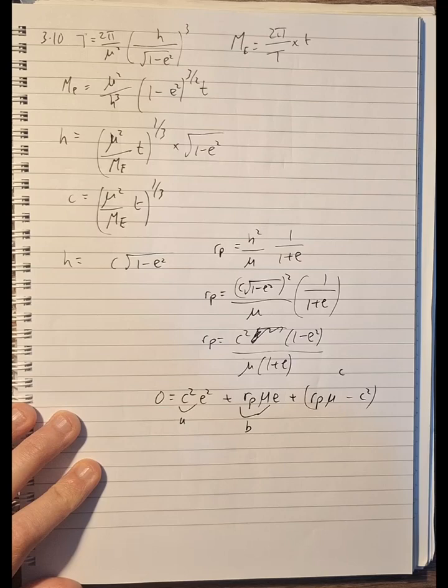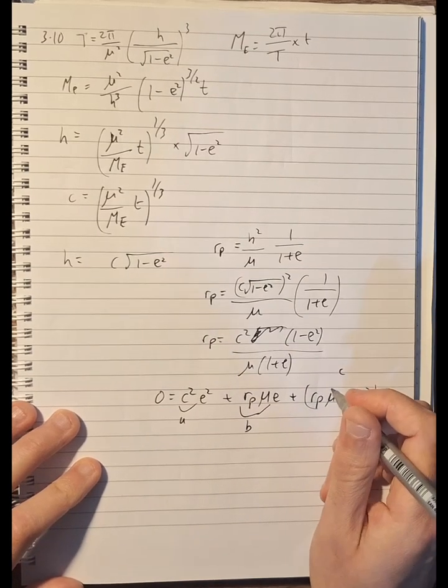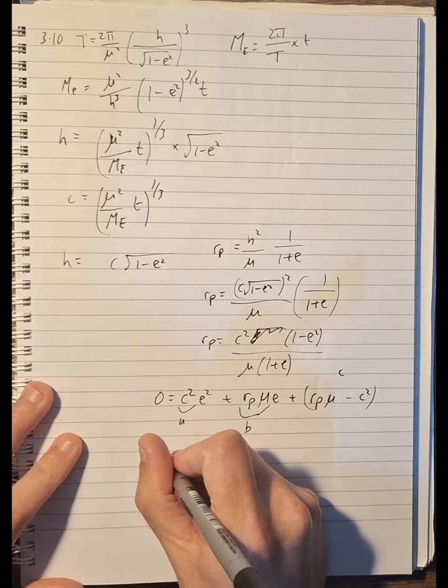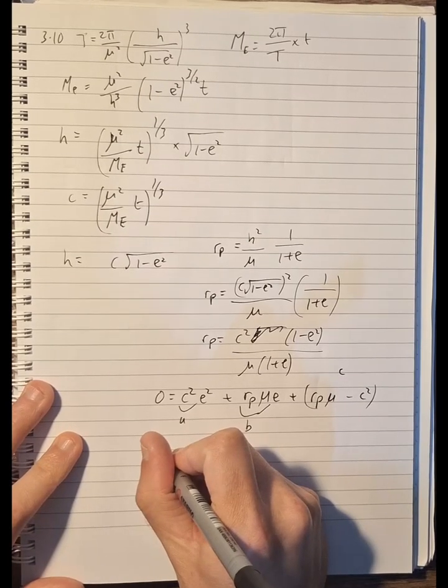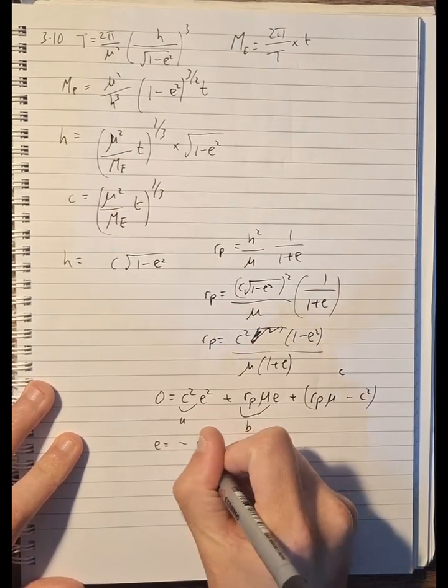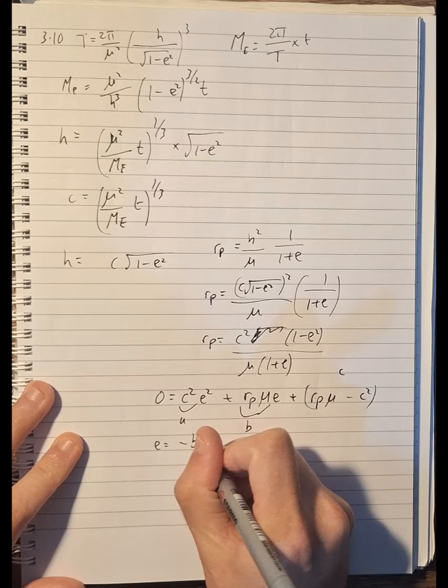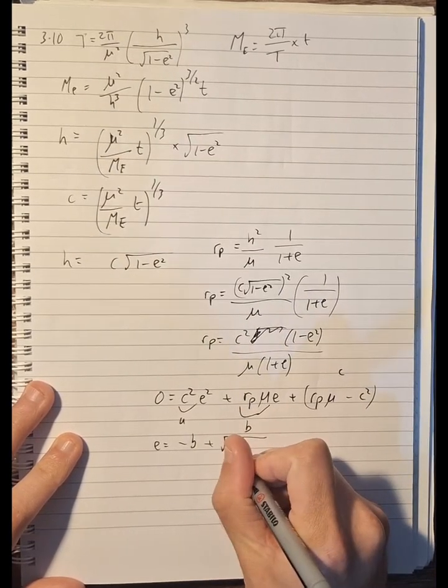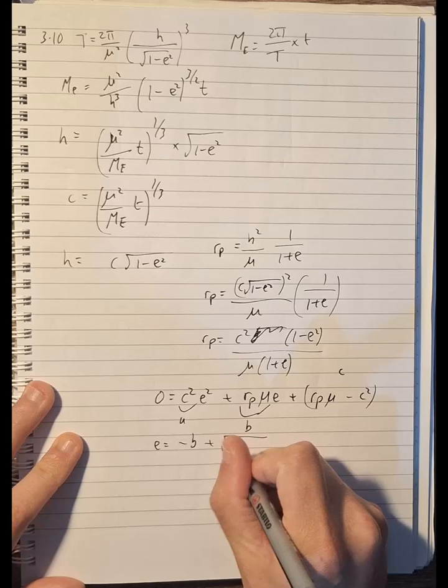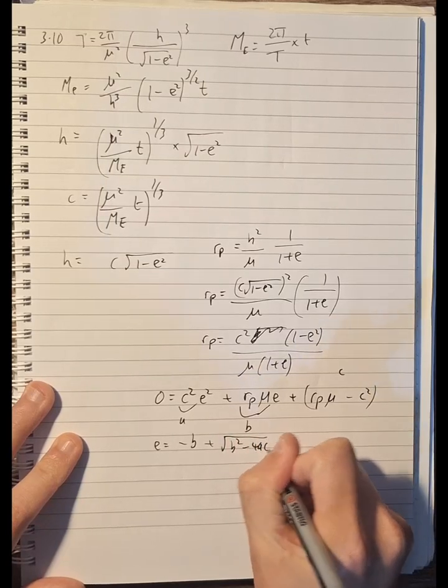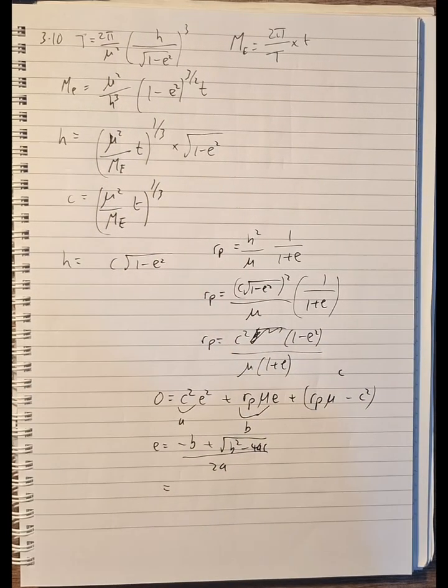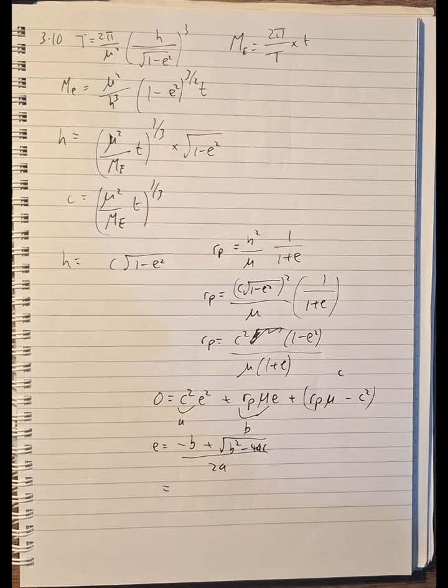So if we solve that, we're going to get e = (-b + √(b² - 4ac))/2a, and that comes out to be e = 0.6609.